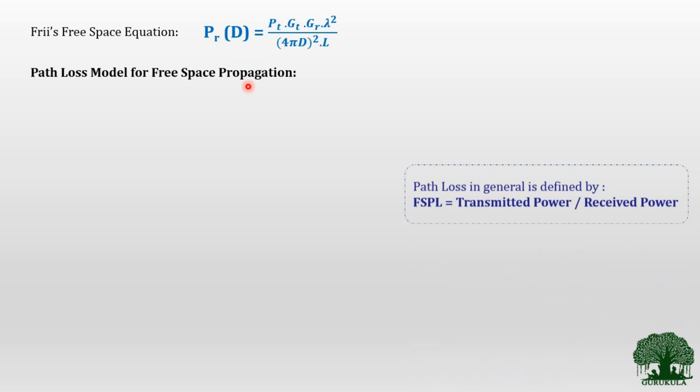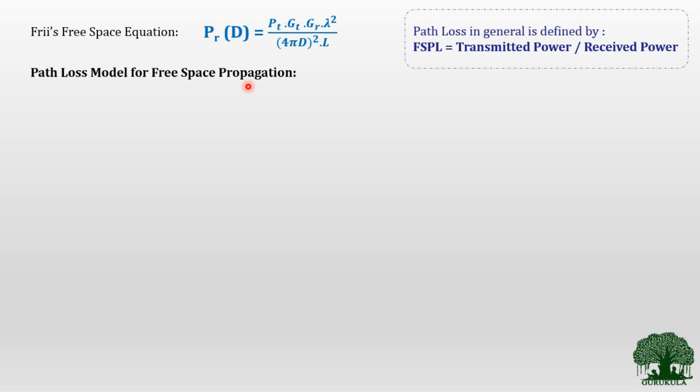So the path loss model for free space propagation: mathematically, free space path loss in general is represented as the ratio between the transmitted power and the received power. The transmitted power in our equation is PT and the received power is PR. So FSPL, which stands for free space path loss, is given by the ratio PT over PR.